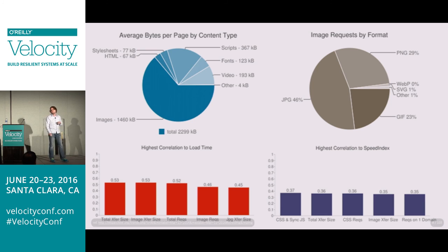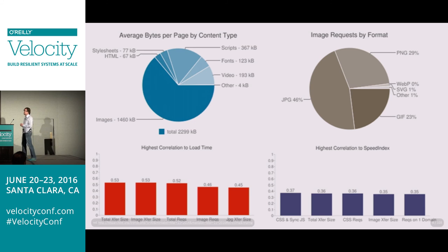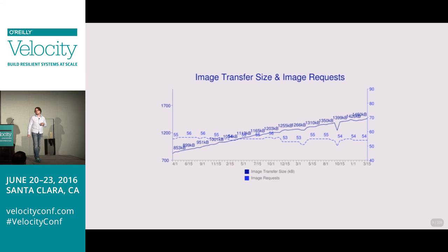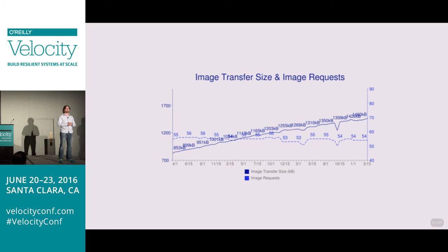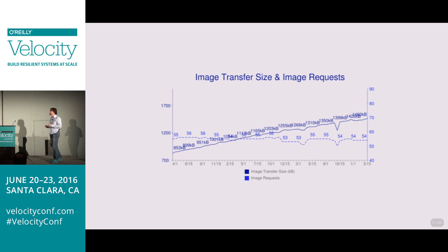This is Steve's HTTP Archive, and it shows us that we have a problem, and the problem is images. Images currently make up about 64% of all website assets, with JPEGs being the lion's share of almost 50% of that. Images have a very high correlation to page load time and also to the speed index, because without an image a website looks incomplete. We also have a devastating trend: images are growing bigger. The number of images on a website stays pretty much the same, but images are currently growing about 200 kilobytes per year.